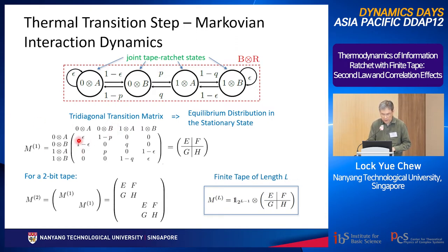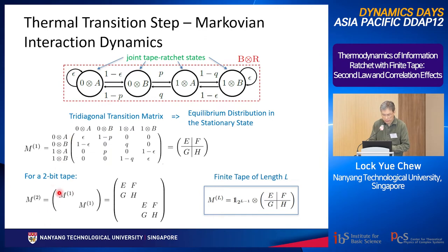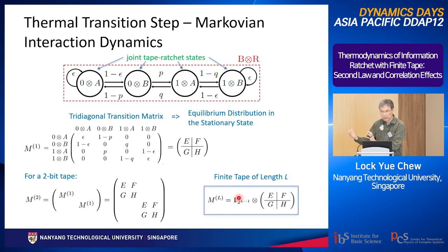Because the tape has length L, we work with a joint state comprising the interacting bead, the ratchet, and the full bead string of the tape. For example, with a two-bead tape the states are A⊗00, A⊗01, etc. For an L-bead tape the joint state has dimension 2^L × nR. The next important step is switching, where the interacting bead moves to the back of the tape. This switching is performed by a permutation matrix S. For tape length L, the permutation matrix takes the specific form illustrated for L=2.